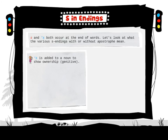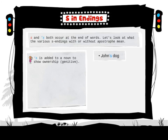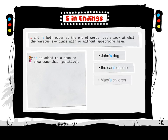Apostrophe S is added to a noun to show ownership — the genitive. Examples: John's dog, the car's engine, Mary's children, the boy's team.